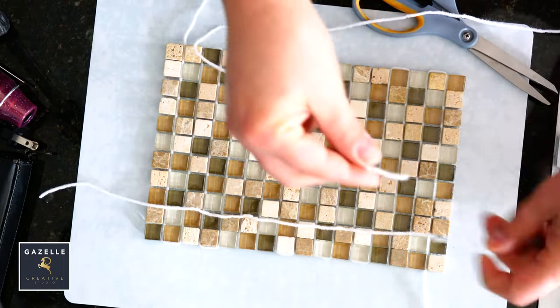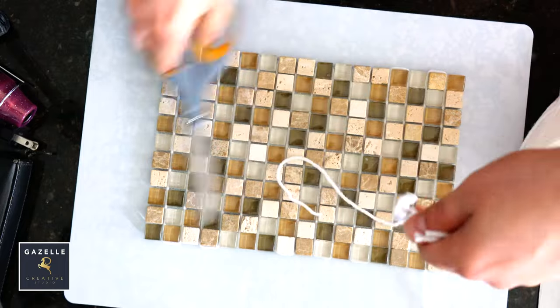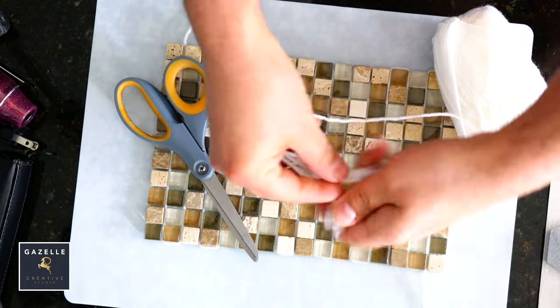Now I will cut yarn and place the strings horizontally, leaving room on both sides to tie the ends.